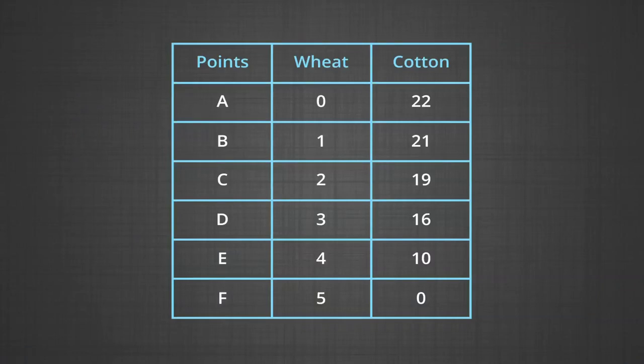The production possibility schedule corresponding to the production possibility curve we have just discussed is shown here. If this economy chooses to produce 16 bales of cotton, the maximum amount of wheat it can produce is 3 tons at point D. Suppose this same economy chooses to produce 2 tons of wheat — can it produce 20 bales of cotton? Table 1 tells us it cannot. The maximum cotton it can produce if it produces 2 tons of wheat is 19 bales at point C.